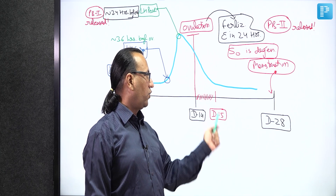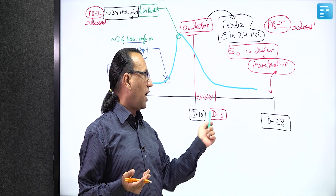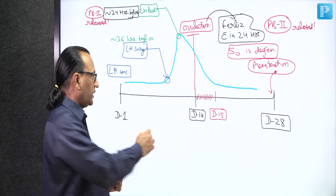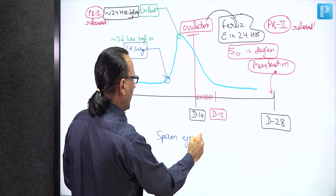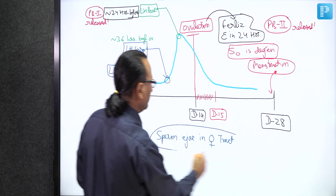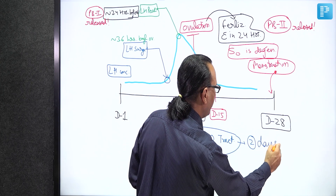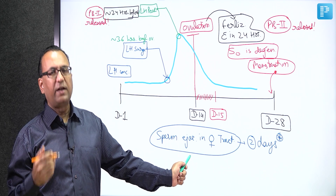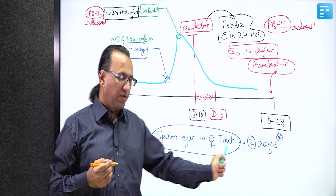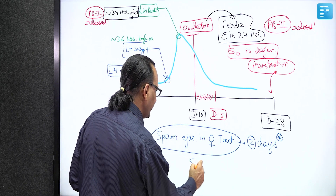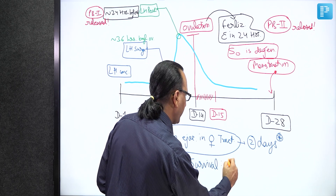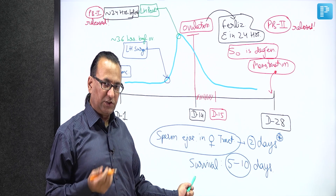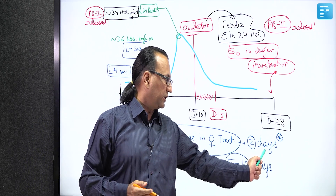Regarding the sperm: once ejaculated in the female tract, the sperm is capable of fertilization for only two days — that is 48 hours. After 48 hours it is incapable of fertilization. As for survival, some authors mention the sperm can survive for 5 to 10 days in the female tract, but during that time it has lost the potential for fertilization. Fertilization can only happen within two days of ejaculation.